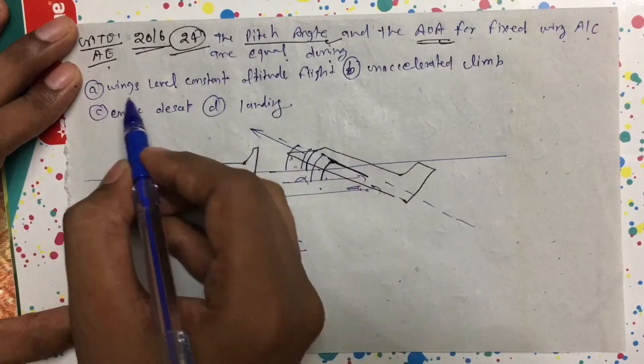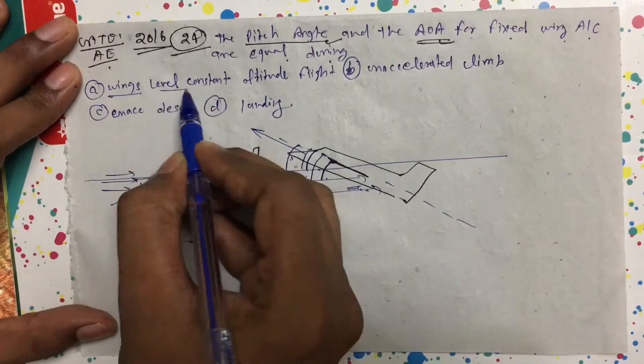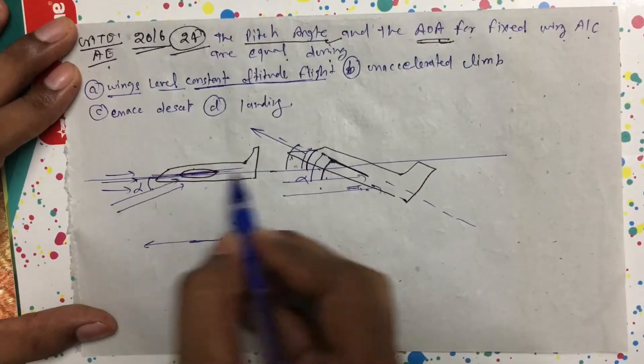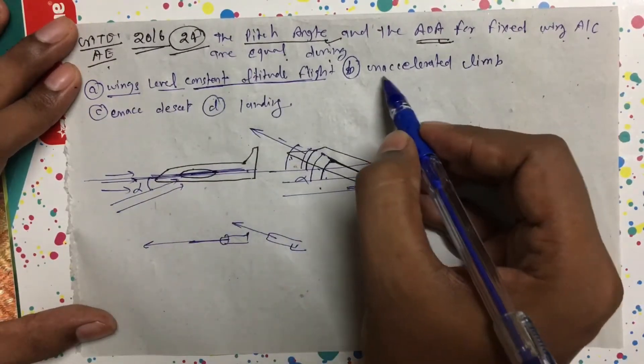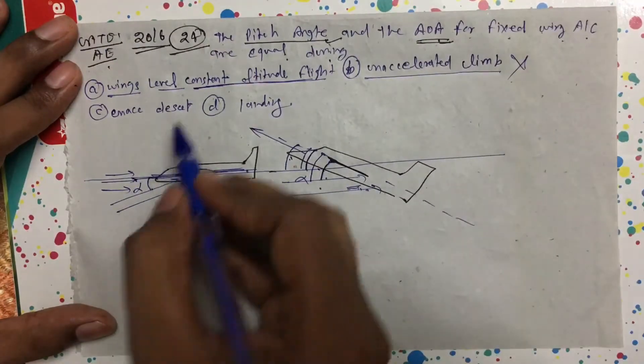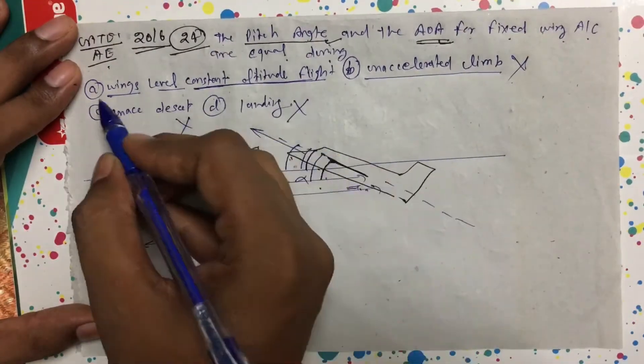So I read the options: wings level constant attitude. Constant attitude means this is the case, right? Next, unaccelerated climb - so climbing is not the case, descent is not the case, landing is not the case. So option A is correct.